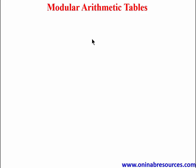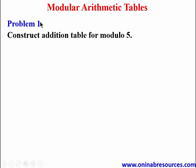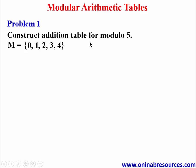We'll take our first problem — Problem 1: construct an addition table for modulo 5. In modulo 5, the set of digits that can be found is {0, 1, 2, 3, 4}. These are the digits that can be found in modulo 5 in their simplest form.